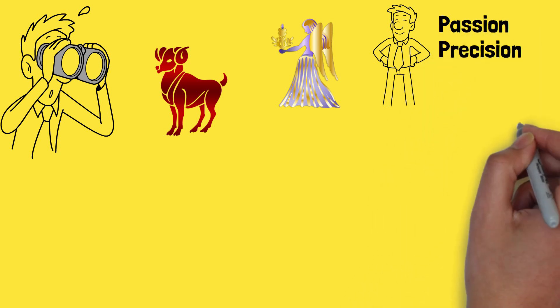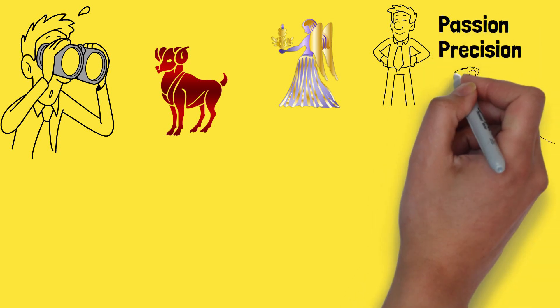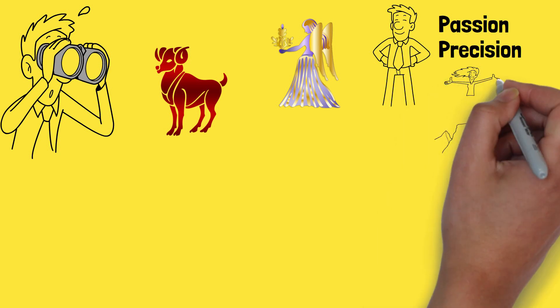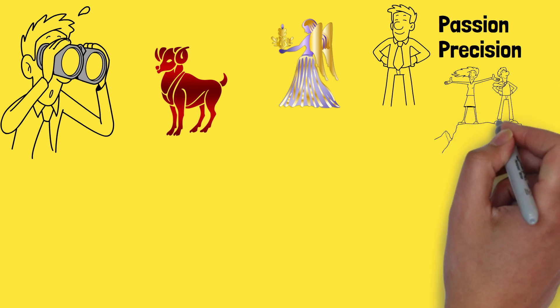When Aries, the bold and adventurous fire sign, encounters Virgo, the practical and detail-oriented Earth sign, it's like watching a roller coaster ride planned by a meticulous engineer.